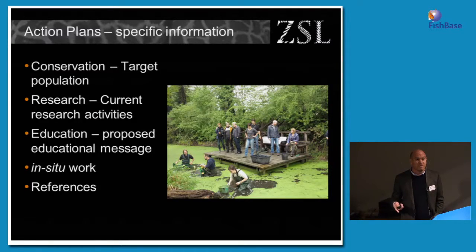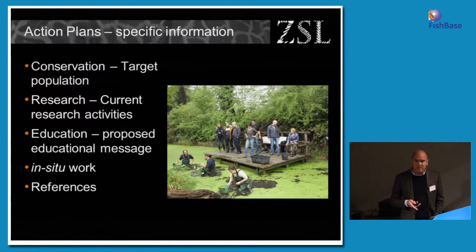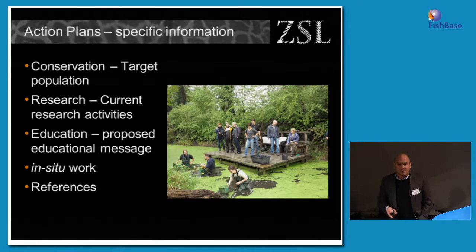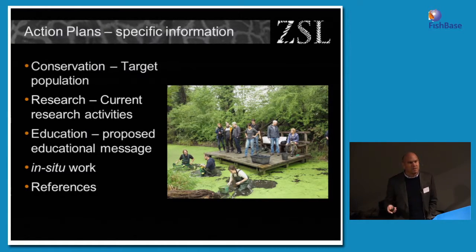Some specific information is also included: What is the target population? If a species has a conservation role, we need enough actively reproducing and surviving in captivity to meet that. Are there current research activities? Disease research is a really important area for fishes in captivity. If it's an education species, what is our message — and is it a message that translates across multiple countries? Is the same message appropriate in Sweden as in the UK or Greece? The action plan would also include any in situ work — it's really important to develop links in-country where the species is from to make the project more robust. And references are always important.